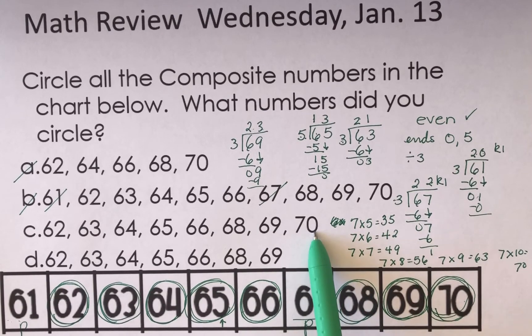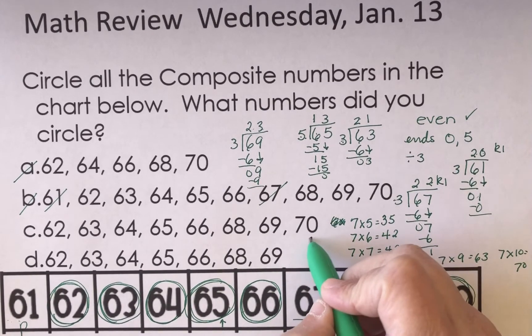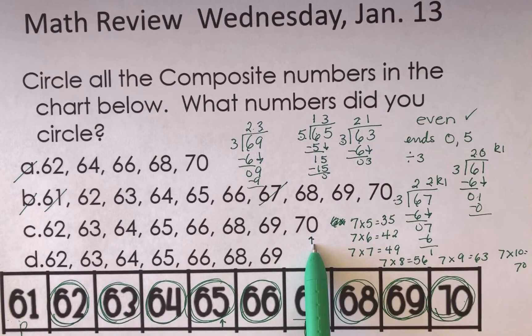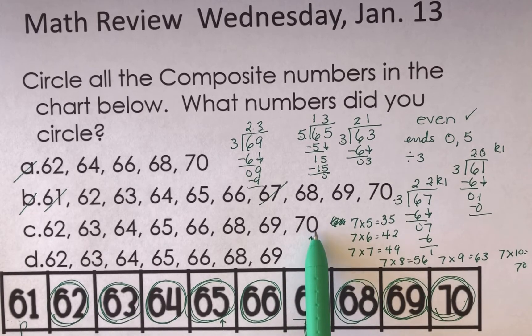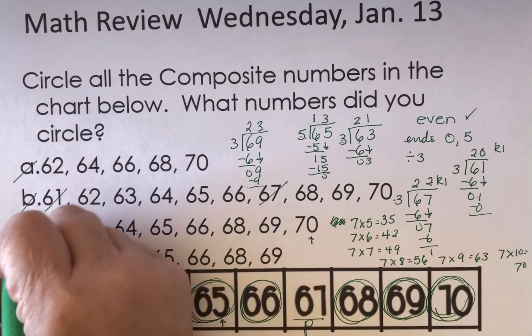70 is even because it has a zero in the ones place. Therefore, it's a composite number. These are all of the composite numbers.